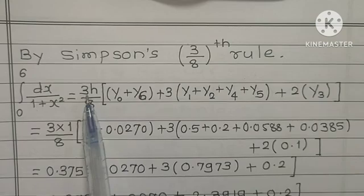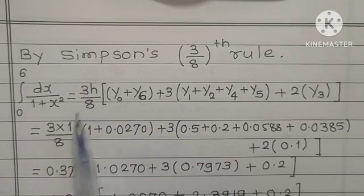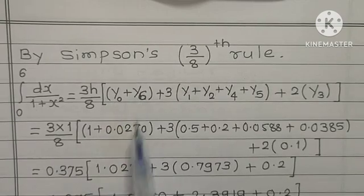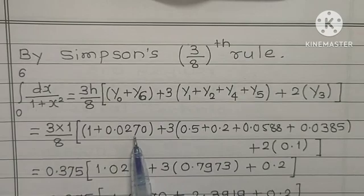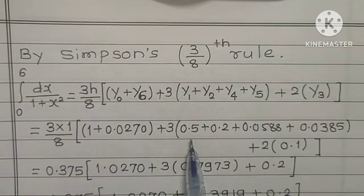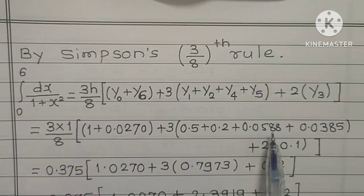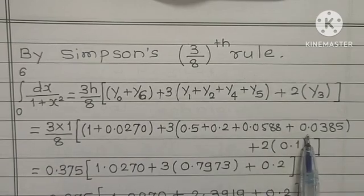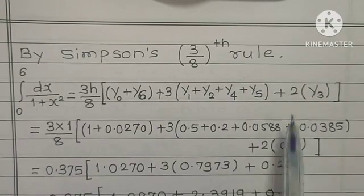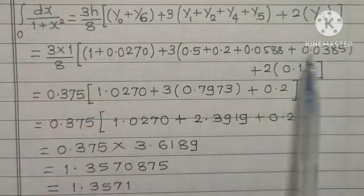Now substitute values. This 3 as it is. H is 1 upon 8. Into the bracket Y0 is 1 plus Y6 is 0.0270 plus 3 into Y1 is 0.5, Y2 is 0.2, Y4 is 0.0588 plus Y5 is 0.0385 plus 2 into Y3 is 0.1.